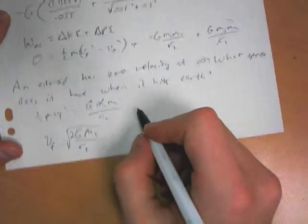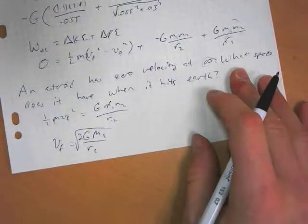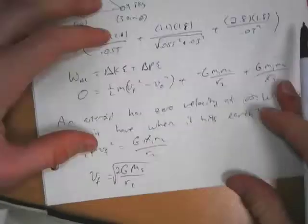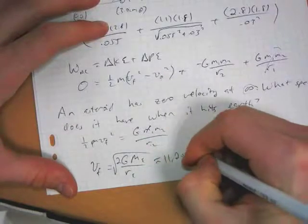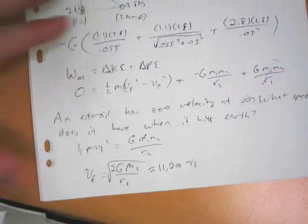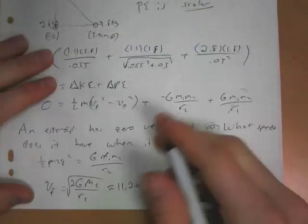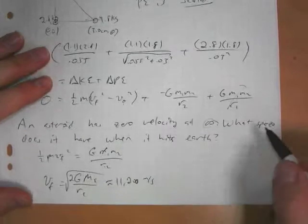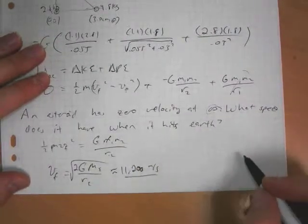And if we plug those values in, we get about 11,200 meters per second. Now the reason that's kind of interesting is that it works the same in reverse. If we wanted to leave Earth's surface and escape, Earth's gravity would have to be going upward with 11,200 meters per second.